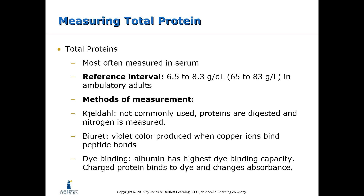Total protein can be measured using the Kjeldahl method, which is not commonly used anymore — proteins are digested and then nitrogen is measured. The Biuret method is most commonly used: a violet color is produced when copper in the Biuret reagent binds to peptide bonds, and then the color change is measured. There is also dye binding — albumin has the highest dye binding capacity. The charged protein binds to the dye, changing its absorbance, and that absorbance change is measured.